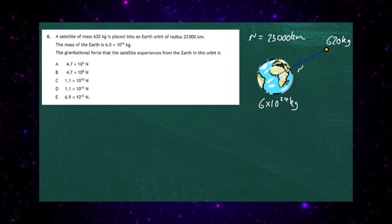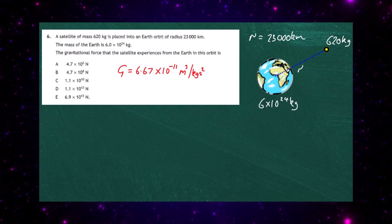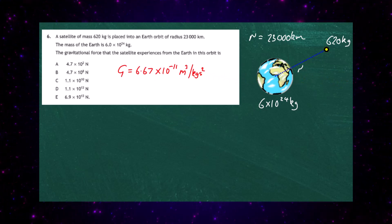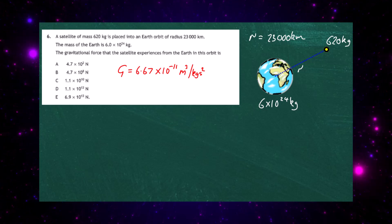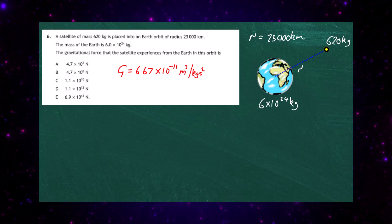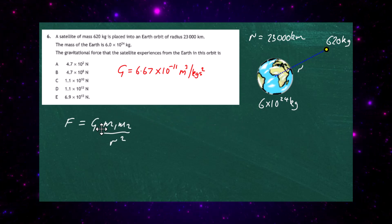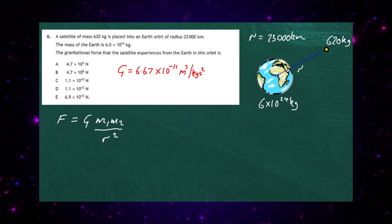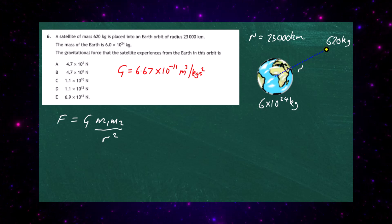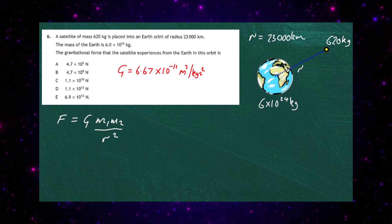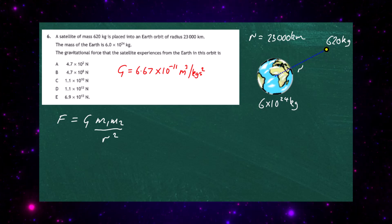Looking up, we have the value of G — the universal gravitational constant — which is 6.67 times 10 to the minus 11 metres cubed per kilogram seconds squared. The formula to work out the gravitational force between two bodies of mass M1 and M2 separated by a distance R is given by that expression there.